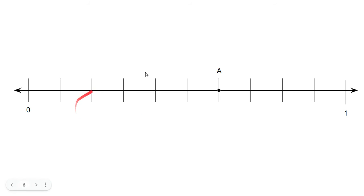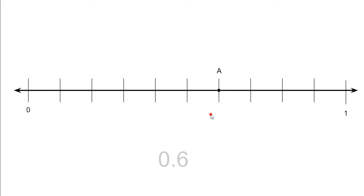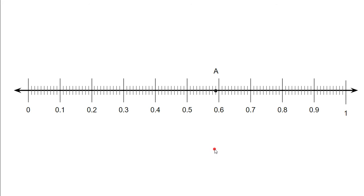We have a number line here broken into 10 parts. This point is at the one, two, three, four, five, sixth point. So that's six out of the 10 parts — six tenths. So one digit after the decimal point: zero and six tenths.